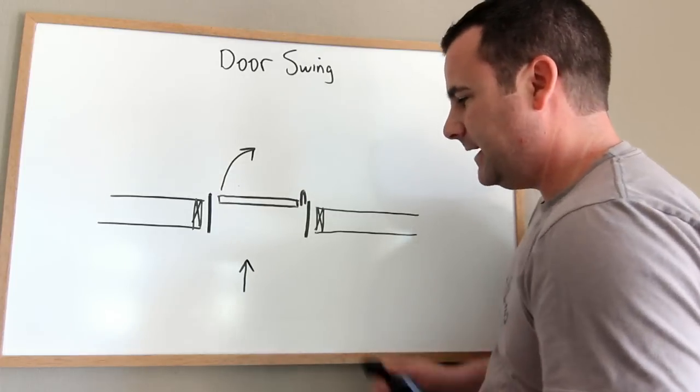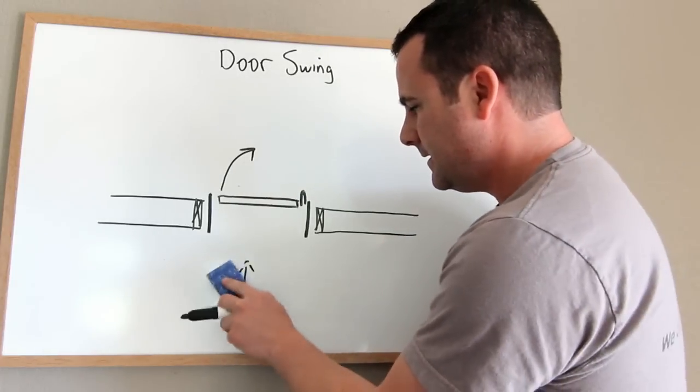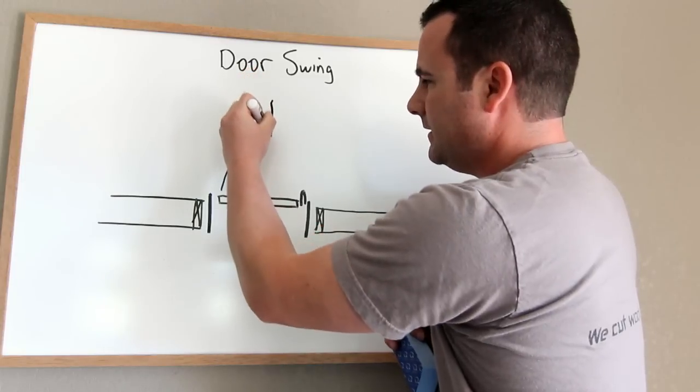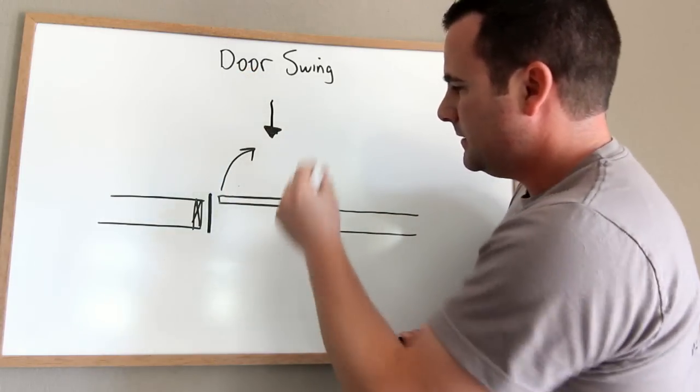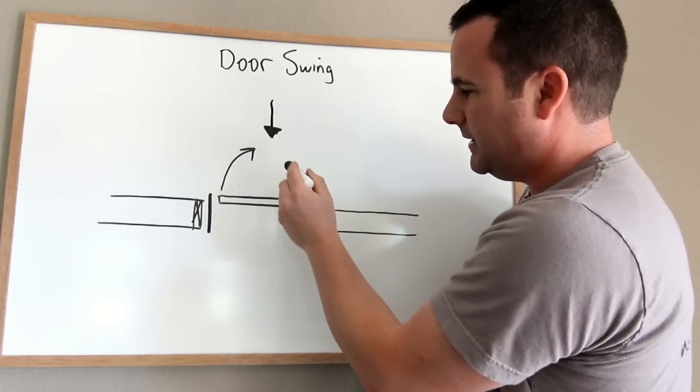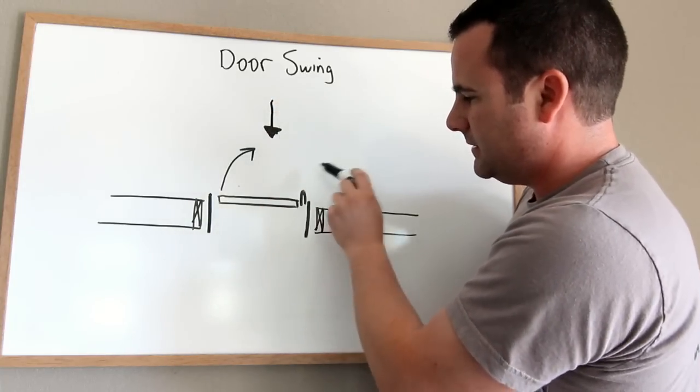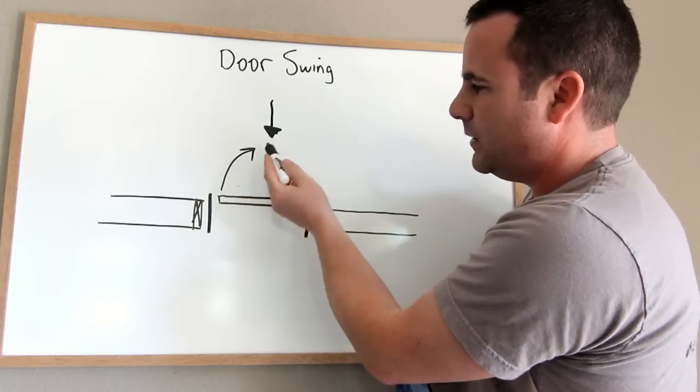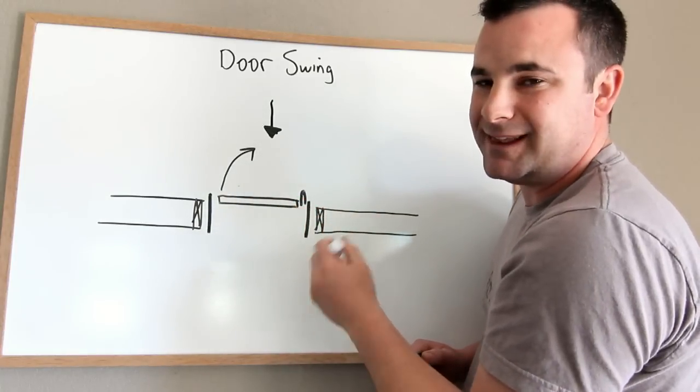However, if the main entry side, like sometimes like a closet door or something, you'll be looking at it this way. So if you can imagine yourself looking at the door in that direction, then the hinge is on the left side, but it's swinging toward you. So it's called a left hand reverse.